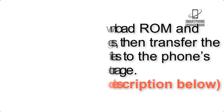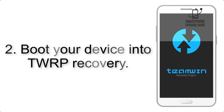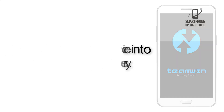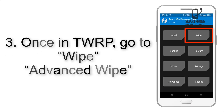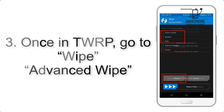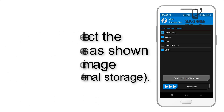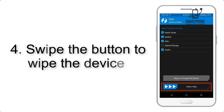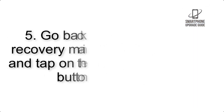The link is in the description below. Step 2: boot your device into TWRP recovery. Once in TWRP, click on Advanced Wipe and select the checkboxes as shown in the image, excluding internal storage. Step 4: swipe the button to wipe the device.